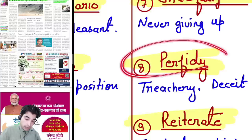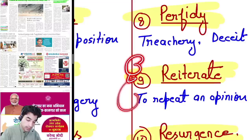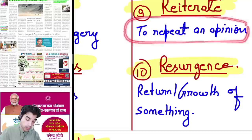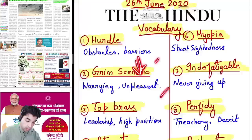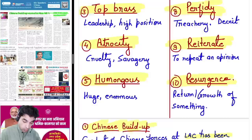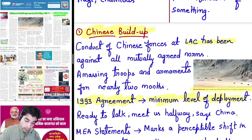'Indefatigable' means never giving up, never giving up at all. 'Perfidy' means treachery and deceit. 'Reiterate' means to repeat — as we reiterated with Nepal that we have friendly relations. 'Resurgence' means the return or growth of something — for example, a resurgence of COVID-19. These are essential vocabulary words we will encounter in the paper ahead. If you come across any other important word, write it with its meaning in the comments below.